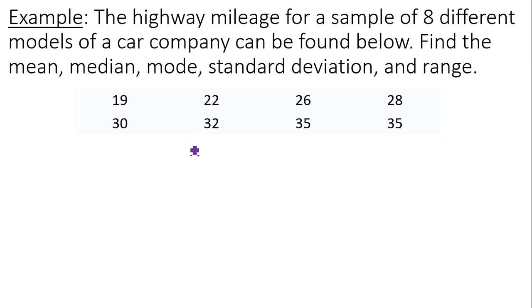So let's jot all of this information down. So we got a mean of 28.38. The sample standard deviation, also known as s, is going to be 5.83. The median would be 29.